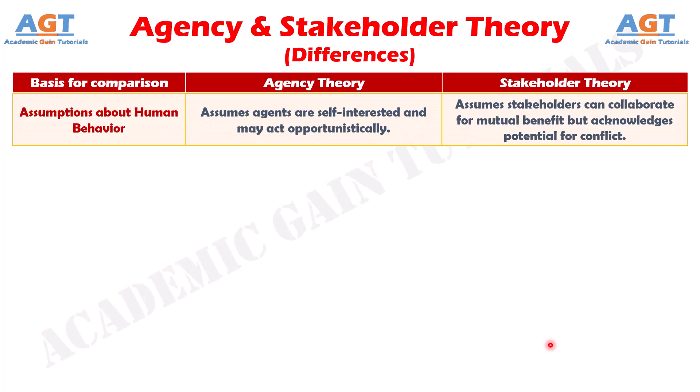Number twelve: agency theory is based on the assumption of self-interest and opportunism, while stakeholder theory assumes that stakeholders can work together but recognizes conflicts.